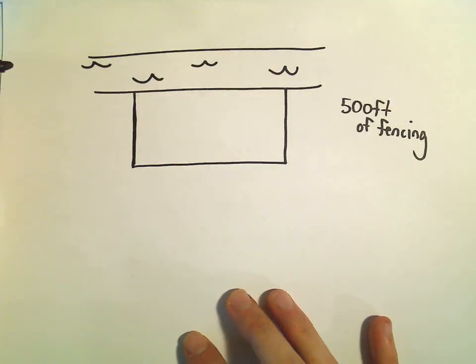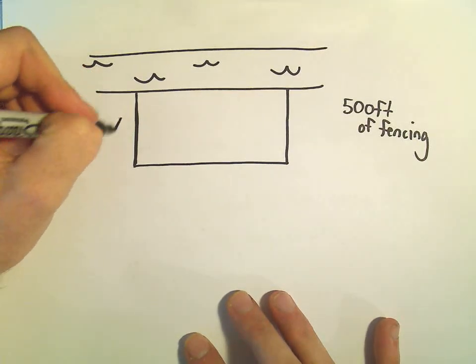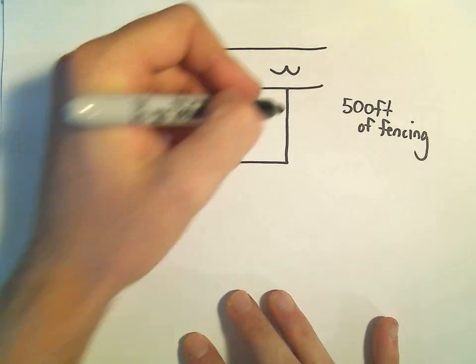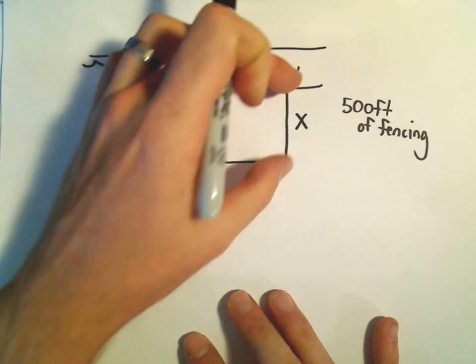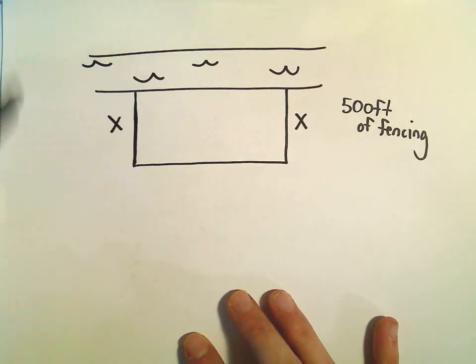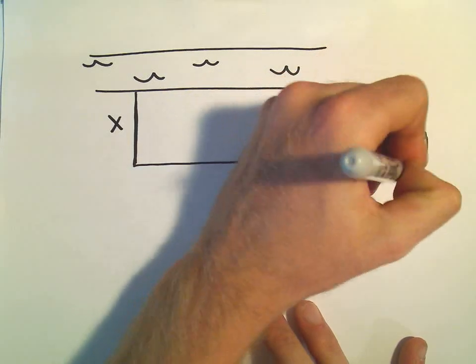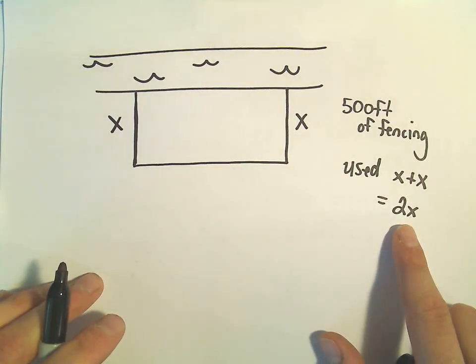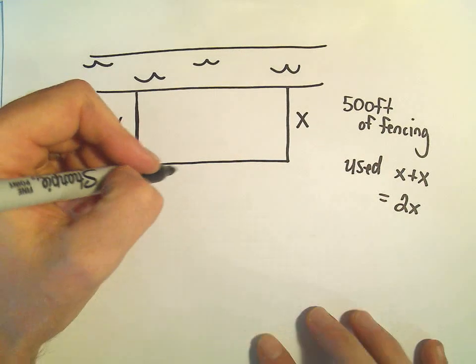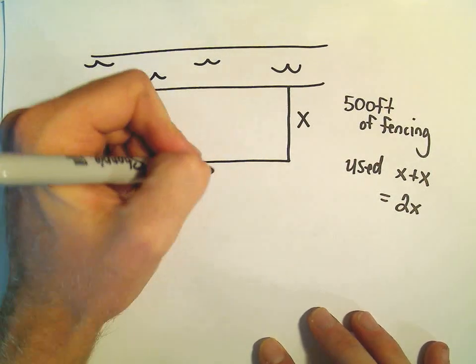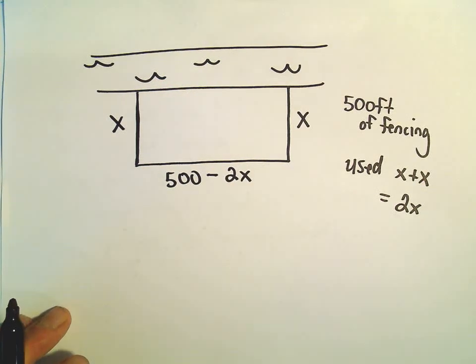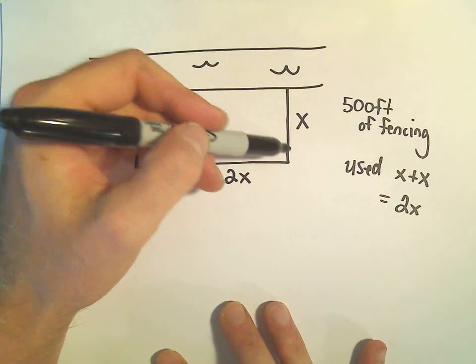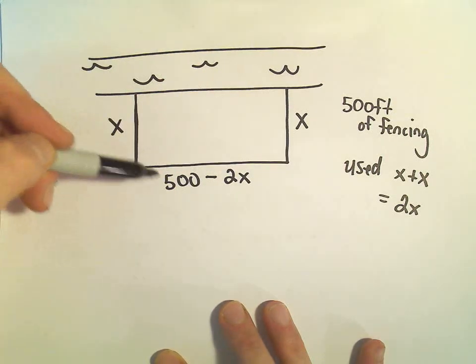So I don't really know any of the dimensions. So this is where we just start labeling things with variables. Suppose I call this length x. So he uses x feet of fencing here. Well, we can also, since it's a rectangle, this would also have to be x feet of fencing. Well, he's used 1x plus 1x. He's used 2x of the 500 feet of fencing. So the remaining amount of fencing would be, well, he's got 500 total, and he would have to take away the 2x that he's already used. So we're going to assume he uses all the fence. So if this is x, this is x, generically the remaining amount of fence would be 500 minus 2x.